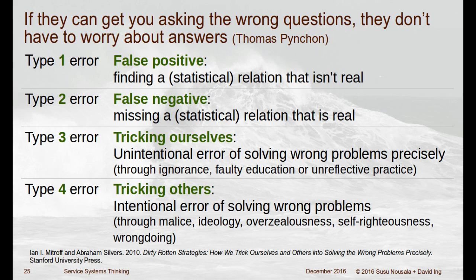There is a type four error — tricking ourselves intentionally: solving the wrong problems through malice, ideology, self-righteousness, or wrongdoing. This comes from Thomas Pynchon: if they get you asking the wrong questions, they don't have to worry about the answers. This is the Donald Trump phenomenon — he's controlling the conversation by saying 'crooked Hillary' or 'the email server,' so people stop focusing on Donald Trump and focus on something else.